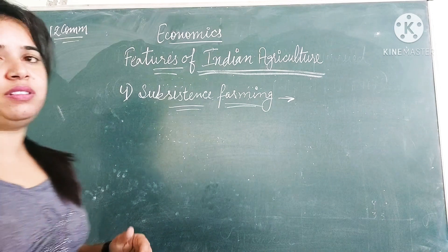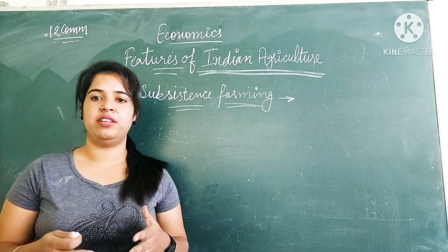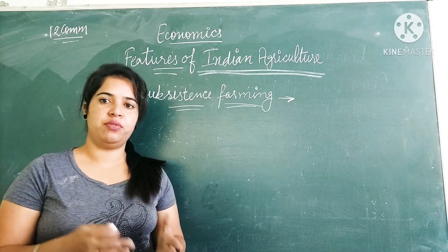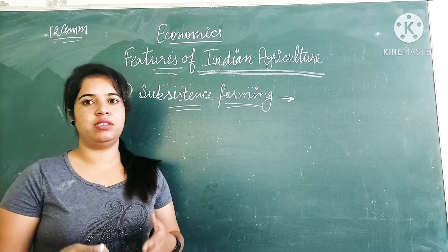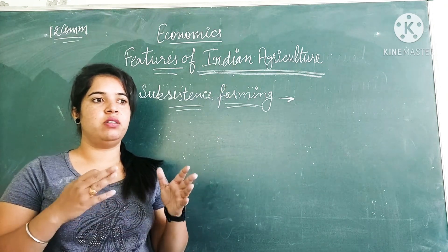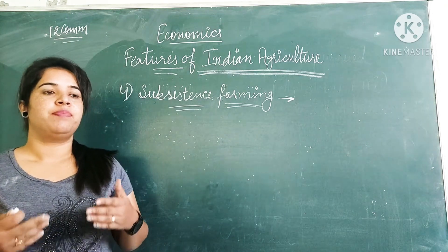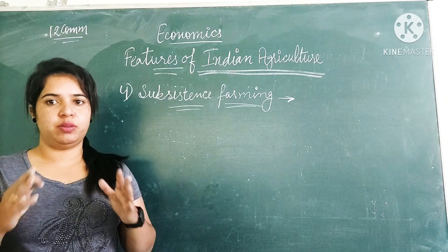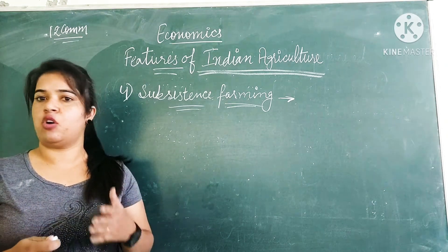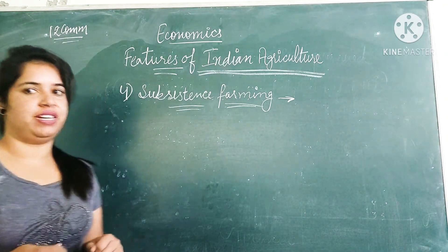The next feature is subsistence farming. Indian agriculture is subsistence farming oriented. Farmers of India mostly think about the subsistence needs of the family and are not focused on commercial needs or profits. That is why investment in agriculture is not there, and this is a reason for the stagnation of Indian agriculture.